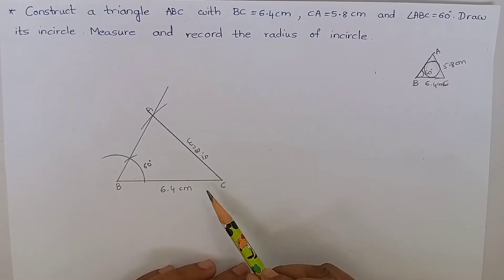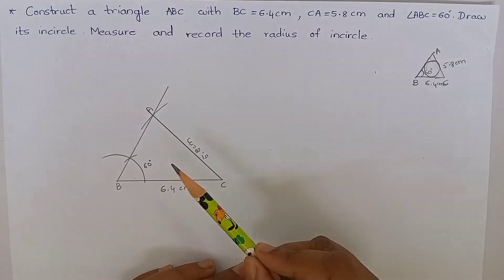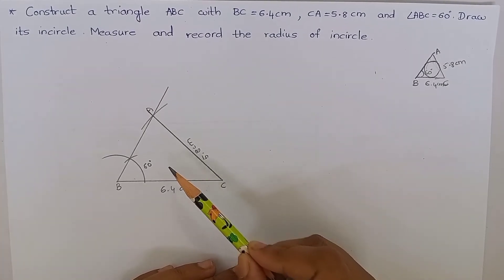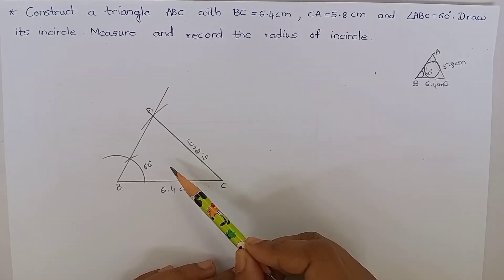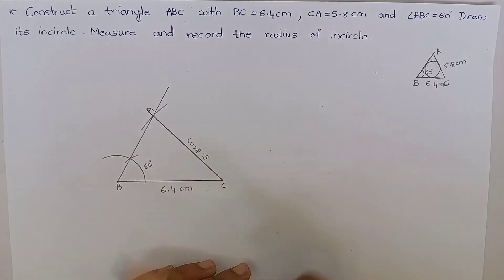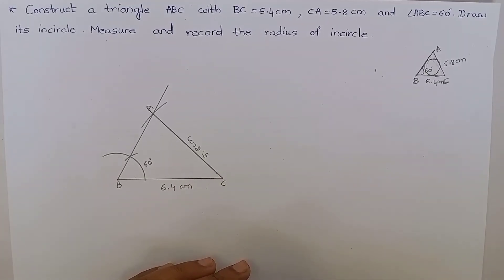Now we have constructed the triangle, and we have to construct an incircle for this triangle. To do this, we have to draw an angle bisector for any two sides.